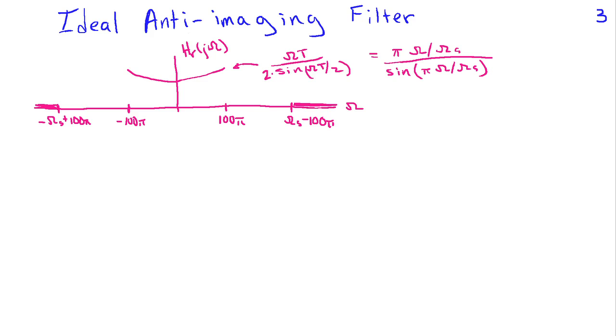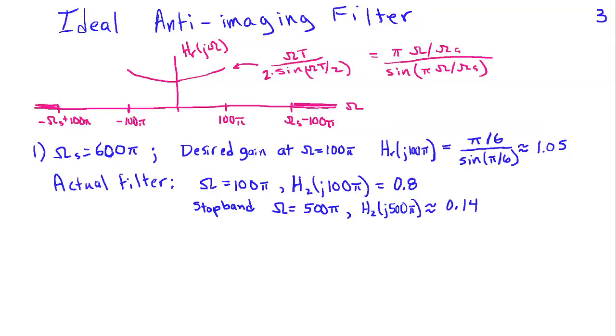Now we're going to look at the anti-imaging filter. Recall that when we use a zero-order hold, what the anti-imaging filter needs to do is be this sort of inverted sinc function in order to eliminate the distortion that the zero-order hold introduces into the original signal spectrum. And then it needs to be zero out beyond ωs - 100π because that's where those images show up due to the replicates of the signal spectrum. This would be an ideal anti-imaging filter.